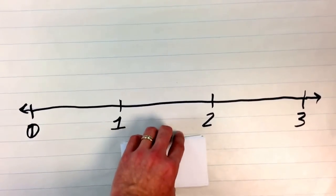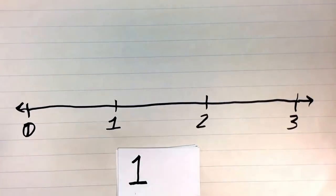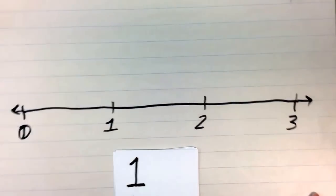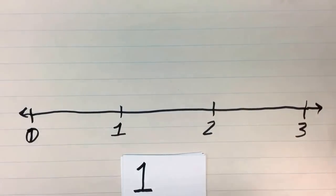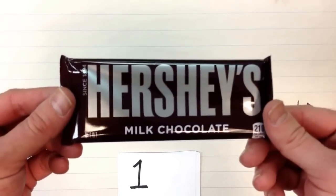In kindergarten, we learned how to count, and it was really easy because we were always counting in wholes. Today we're going to use something delicious to represent our whole, our one whole thing, and we're going to use one whole Hershey's candy bar.